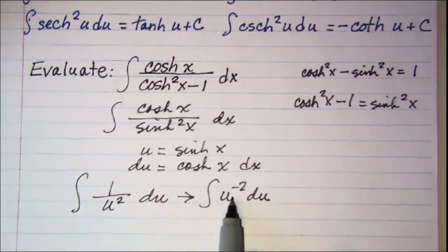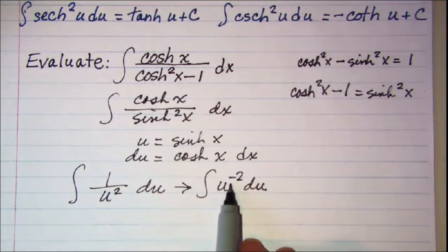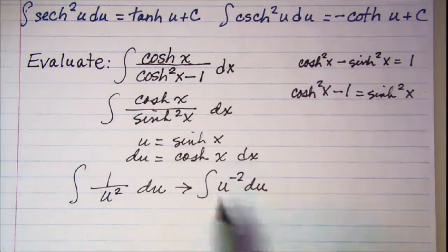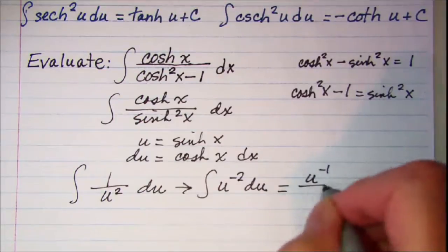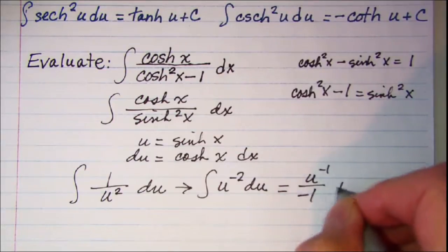So when we integrate this we increase the exponent by 1 and divide by the new exponent. So that is u to the negative 1 divided by negative 1 plus a constant.